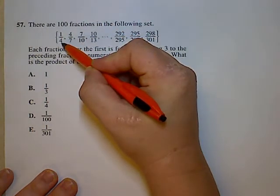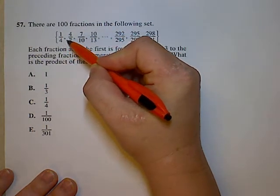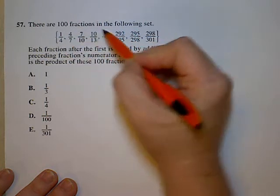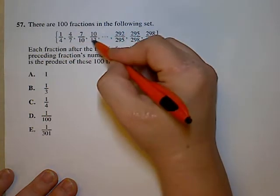Notice that whatever number is on the bottom, when you rise up to the next fraction, it's the same numerical value. 4, 4, 7, 7, 10, 10. If we wrote these all out, they'd be 13 and 13.